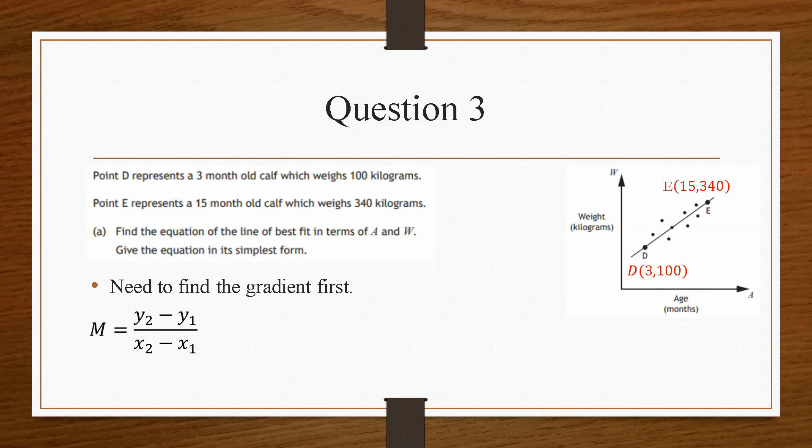But we first need the gradient. So we use this formula, plug the numbers in, we will end up with a gradient of positive 20. And that's what we're looking for, because we have a positive line. It's going in a positive direction.